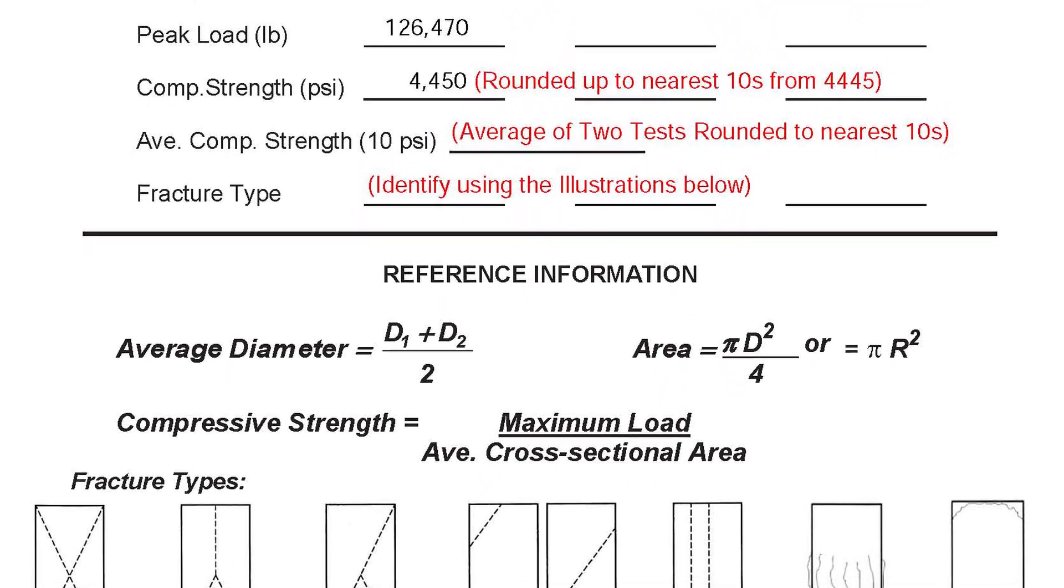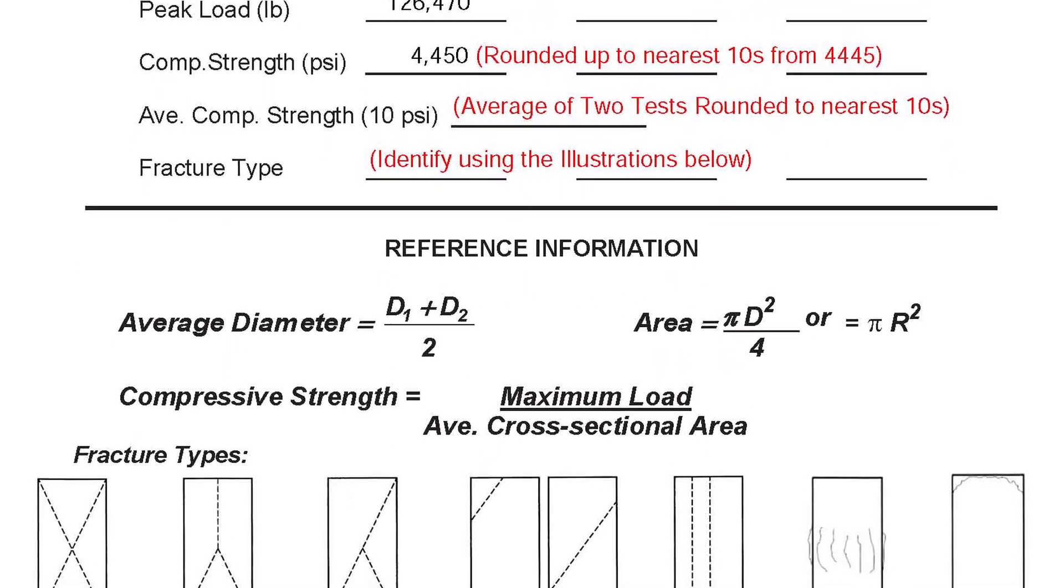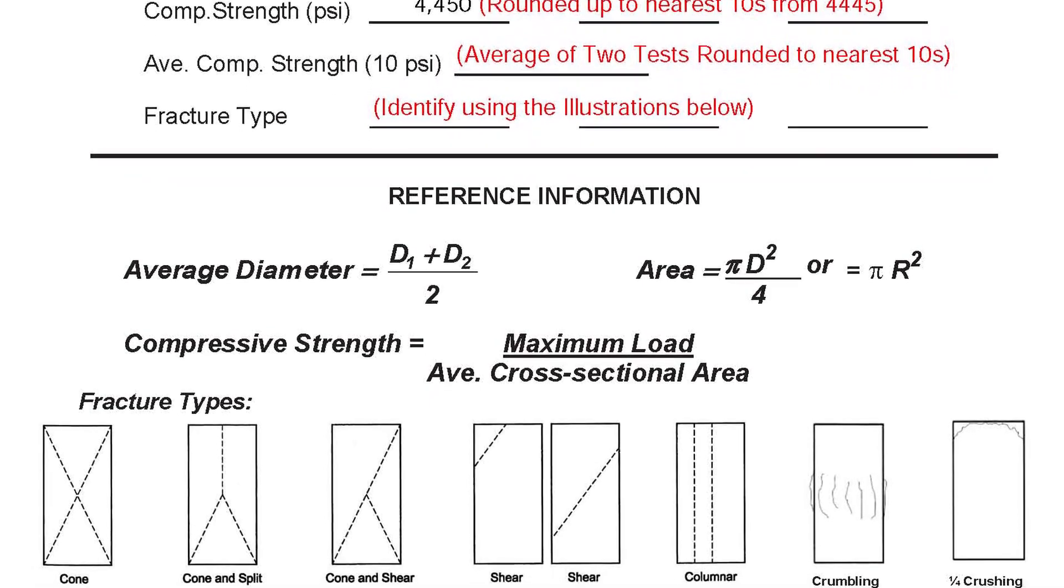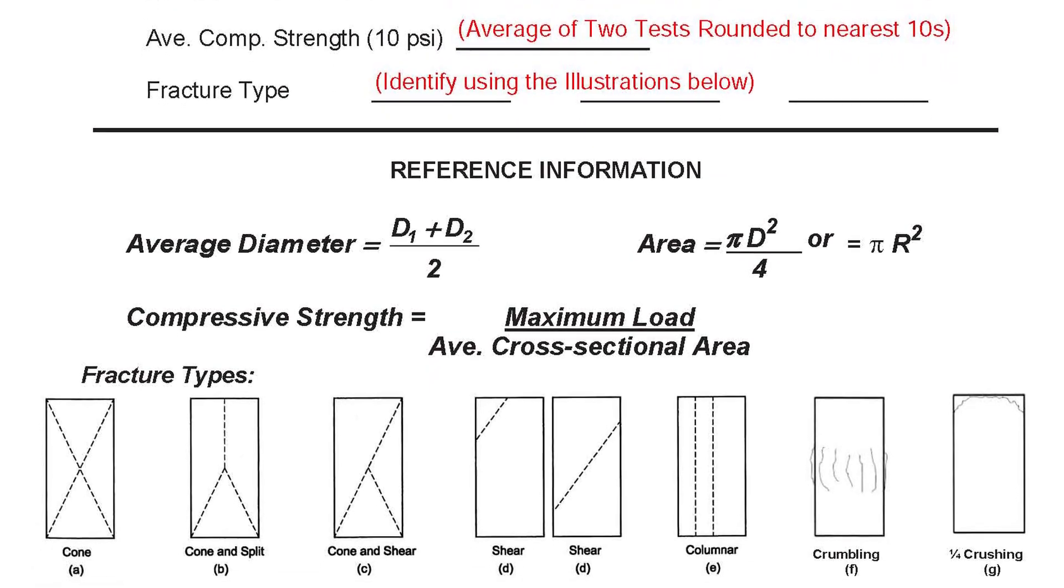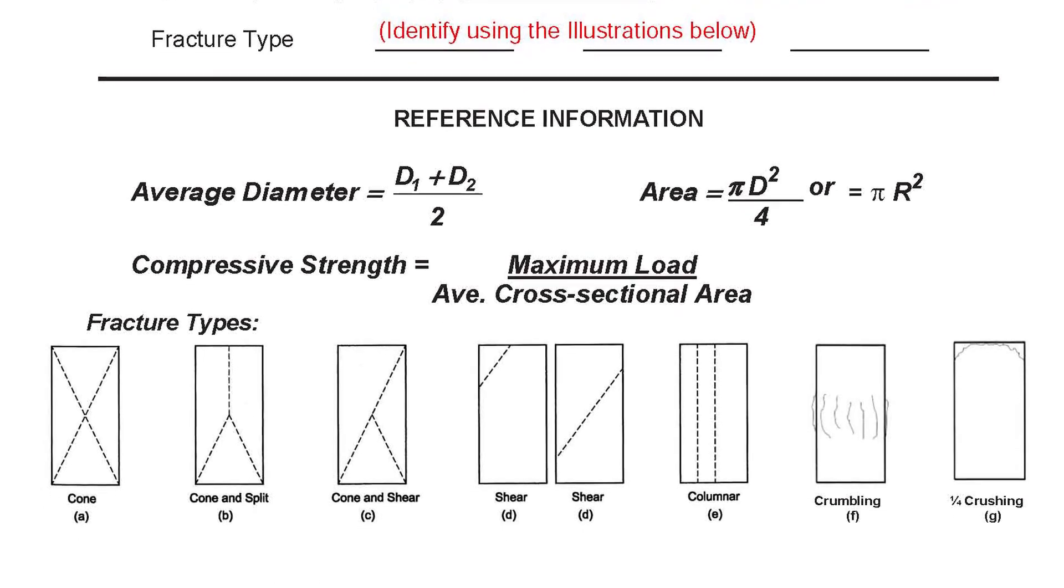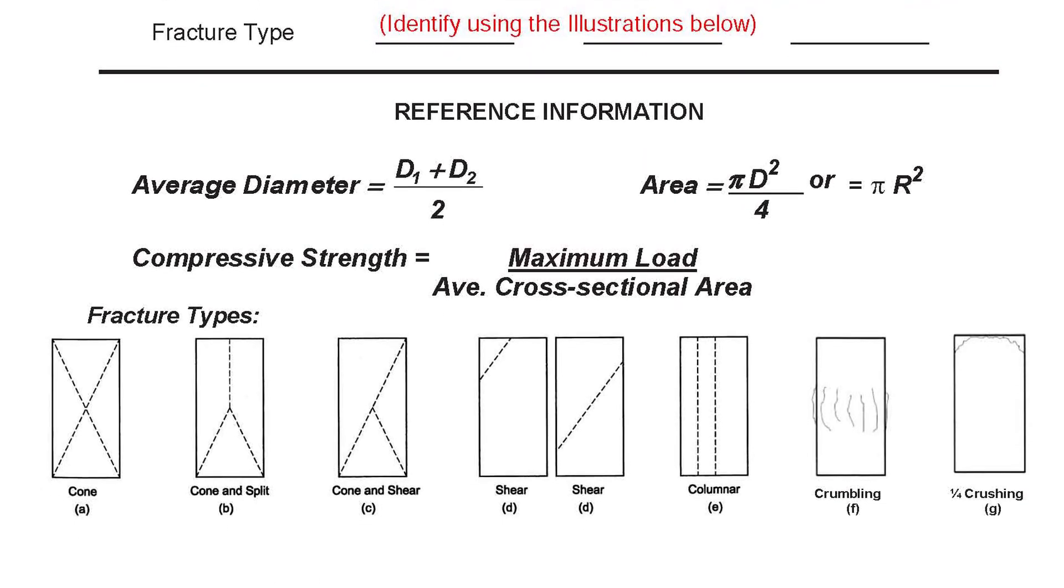Finally, the fracture type is the last item that you need to report on your compressive strength test. We see illustrated for us at the bottom of the page the various types of fractures that we should note. In our reports simply identify the letter designation you see illustrated here.